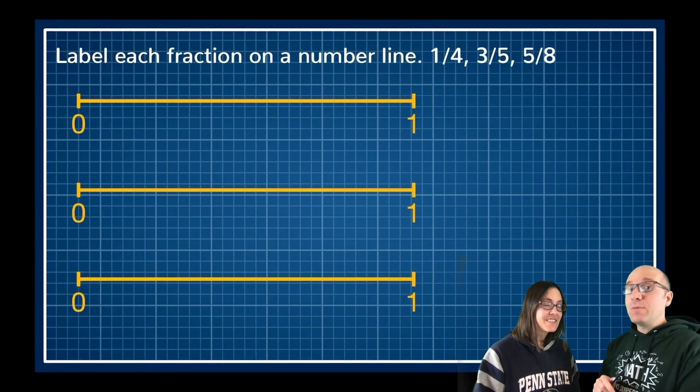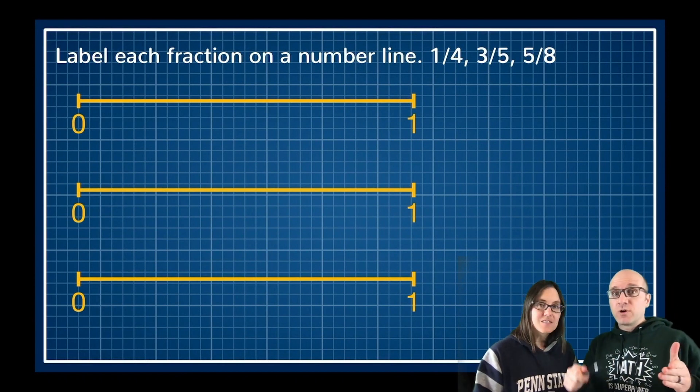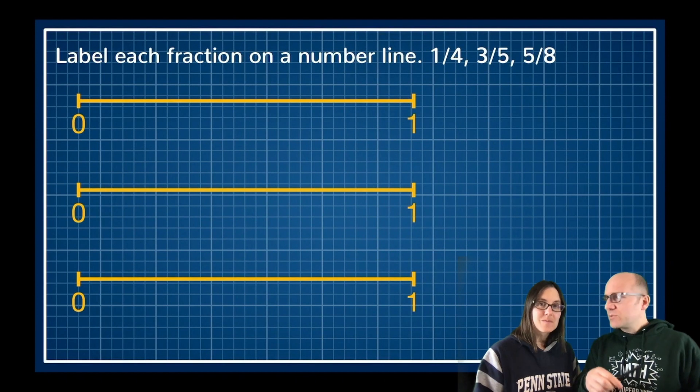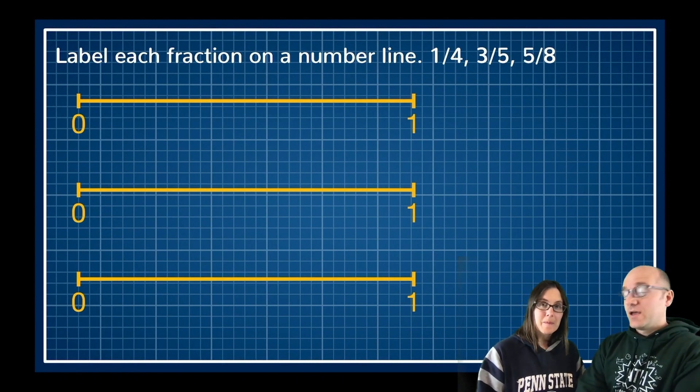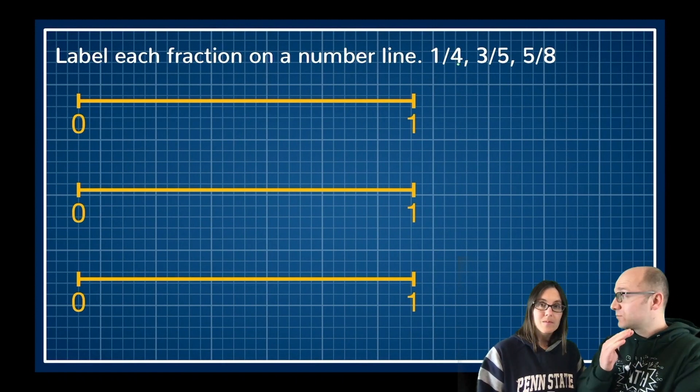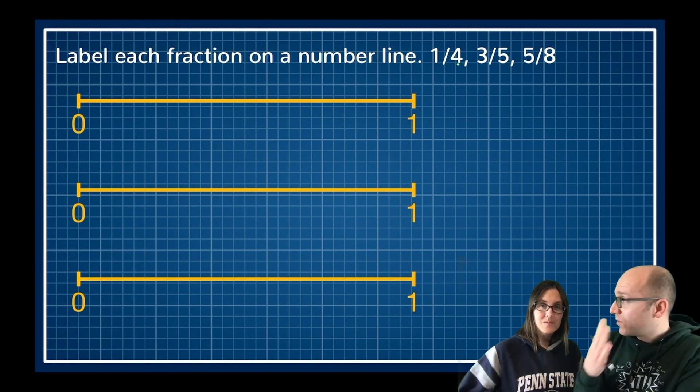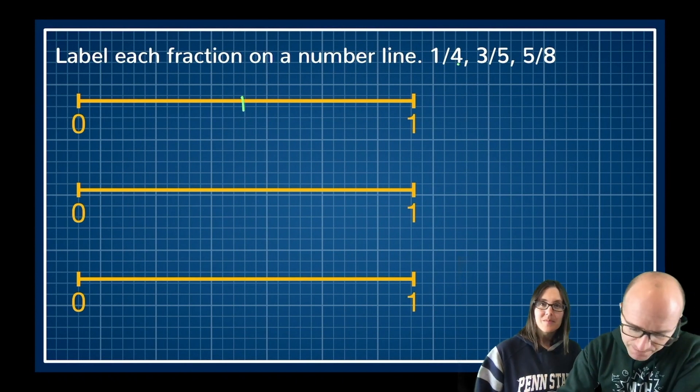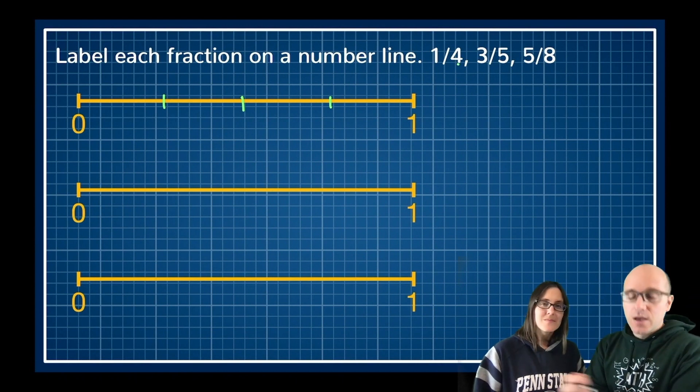This next challenge we want to label the fractions on the number line. In the past when we've looked at number lines we've seen numbers like zero, one, two, three, four, just our counting numbers. But now we're looking at numbers between those nice round whole numbers. Between zero and one. So let's start with one fourth. So the one on top is the numerator. The four on bottom is the denominator. The four tells us how many pieces we need to slice it into. So I've got from zero to one. I'm going to slice that into four pieces.